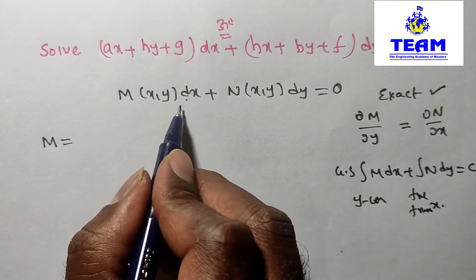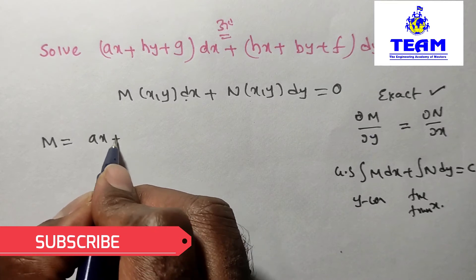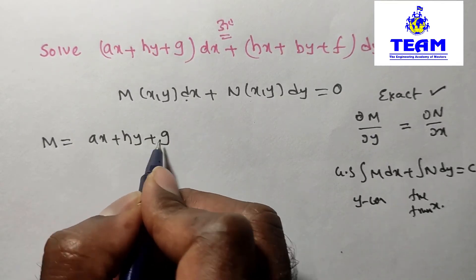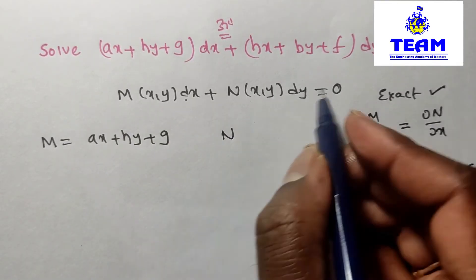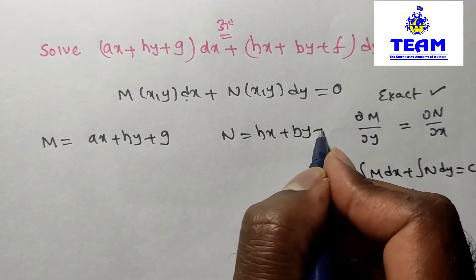M is the dx coefficient. What is M here? ax + hy + g. And N is the dy coefficient. Here N is hx + by + f.